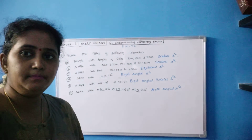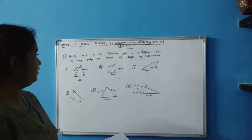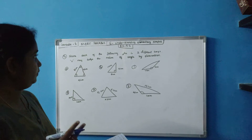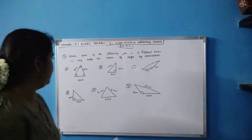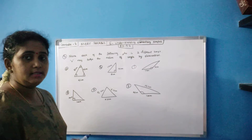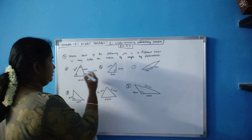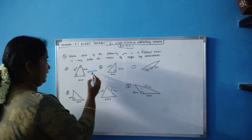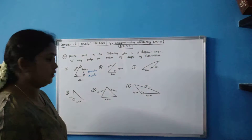Now let's move on to the third sum. They ask you to name each of the following triangles in two different ways — you may judge the nature of angles by observation. The first triangle has sides 5 cm, 5 cm and 8 cm. Two sides are equal, so that is isosceles triangle. And the angles are less than 90 degrees, so it is also an acute angle triangle — isosceles and acute angle triangle, named in two ways.